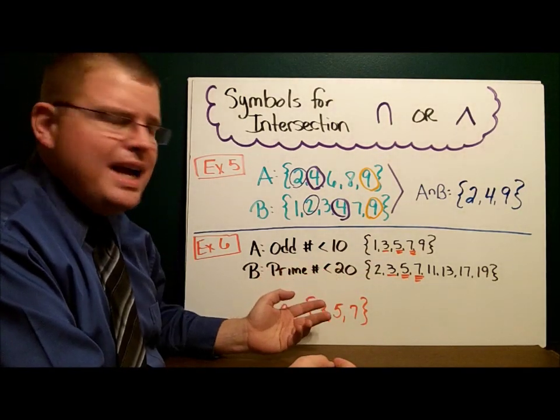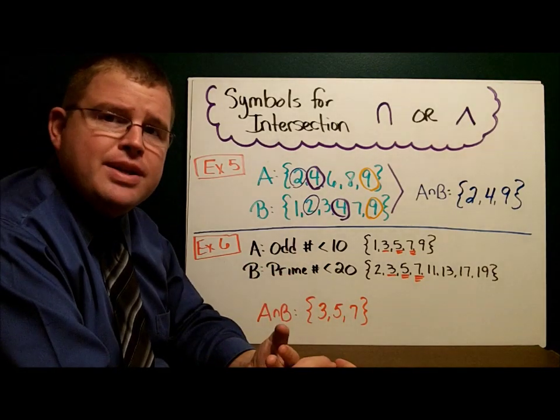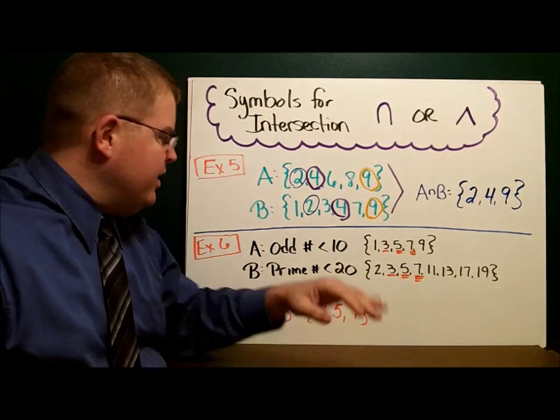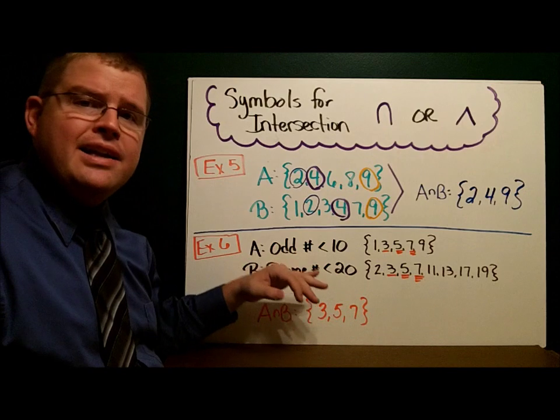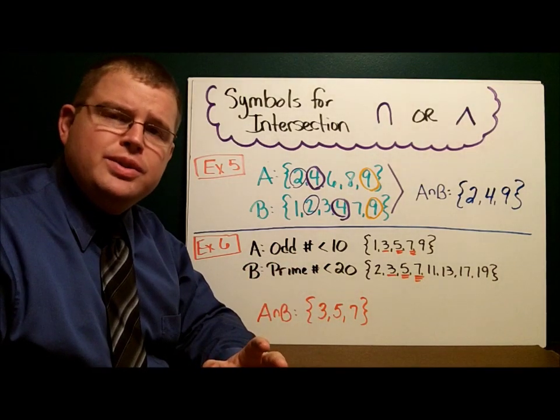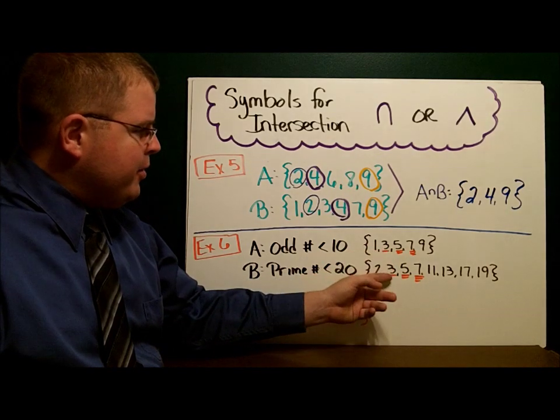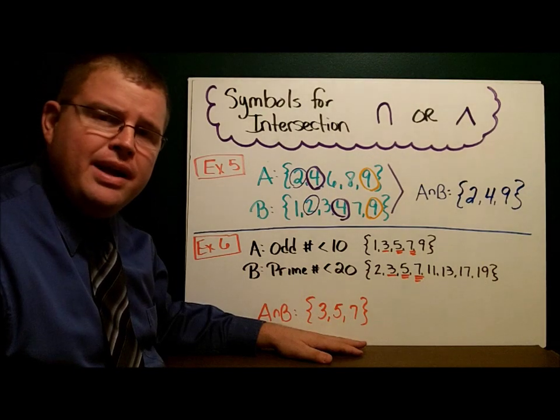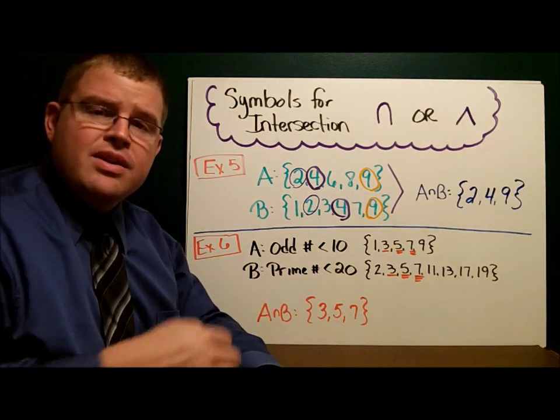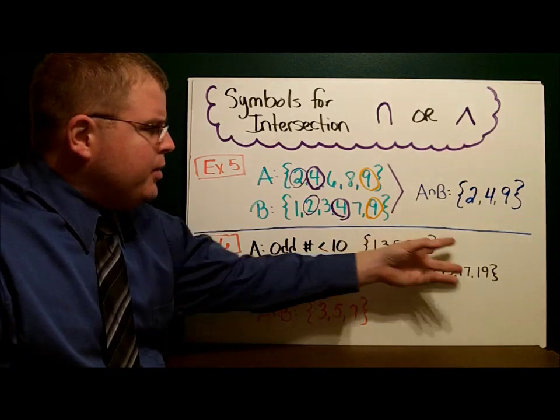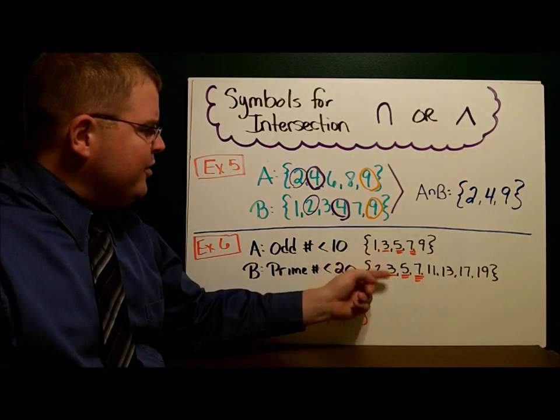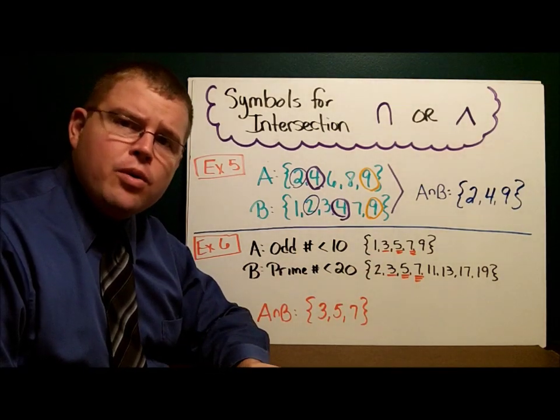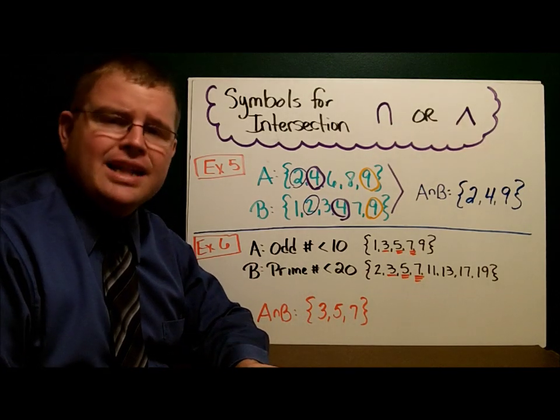We have the same set with the odd numbers and the prime numbers that we had before. Except instead of the union this time, what we're doing is finding the intersection. Odd numbers less than 10, prime numbers less than 20. What do those 2 sets have in common? They both have 3, 5, and 7. So A intersect B is 3, 5, and 7. That's a great strategy for organizing your work and working with these sets. I highly recommend that.